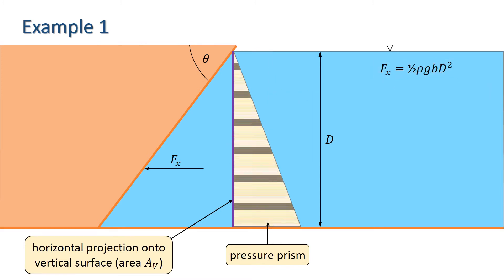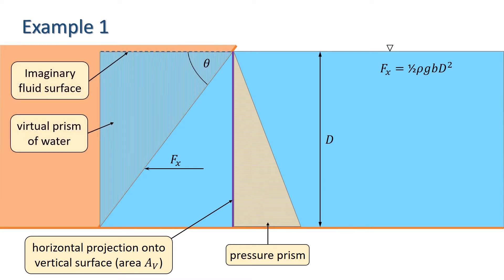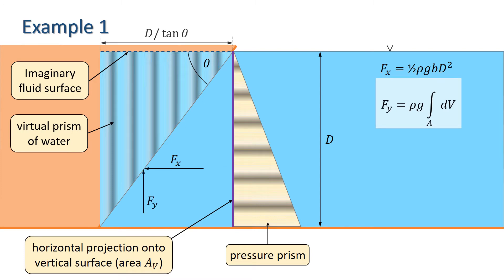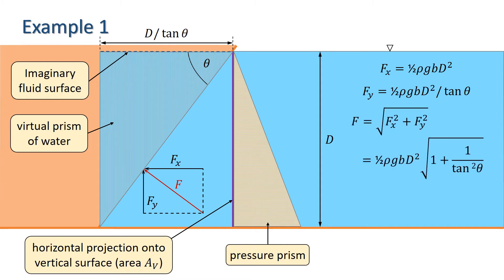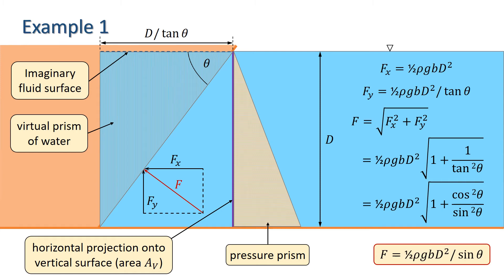For the vertical component of the force, we calculate the weight of the fluid in the virtual prism of water shown here, which is simply rho g times the volume of the prism. The prism has width d over tan theta and height d, so the area of the triangle is one-half d squared over tan theta, which means the vertical component of the force is one-half rho g b d squared over tan theta. The magnitude of the total thrust is thus one-half rho g b d squared times the square root of 1 plus 1 over tan squared theta, which yields one-half rho g b d squared over sine theta — agreeing with what we obtained using the direct method.